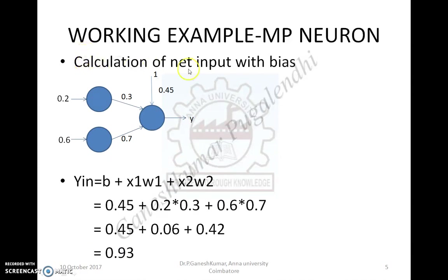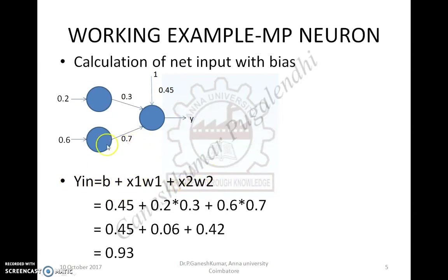The next example is how to calculate the net input with bias. You will be provided with the architecture with input values, weight values, as well as the bias value. The input for the bias connection is always 1 — it is a constant input and the weight value changes, represented by w_B. So Y_in = B + x1*w1 + x2*w2. This is the formula for calculating the net input. Upon substituting the values, you will get the net input as 0.93.